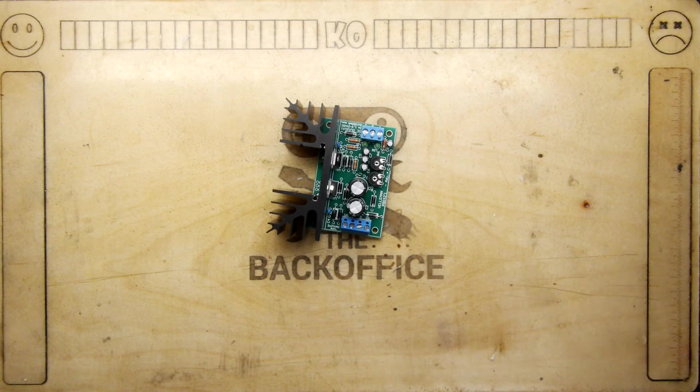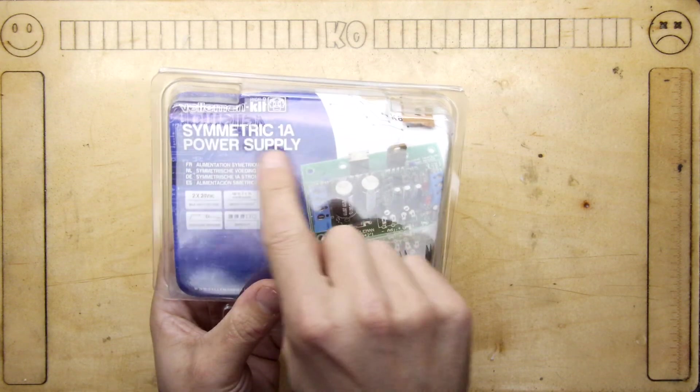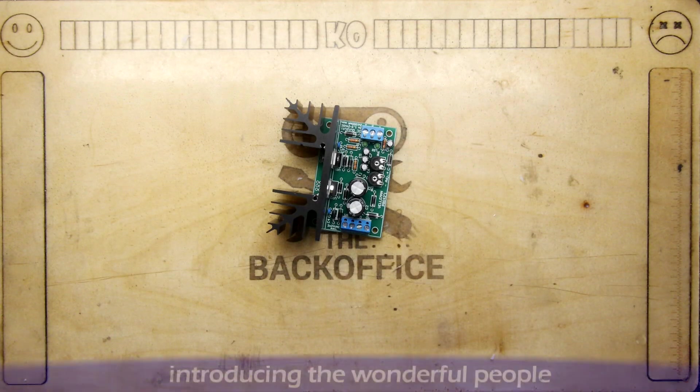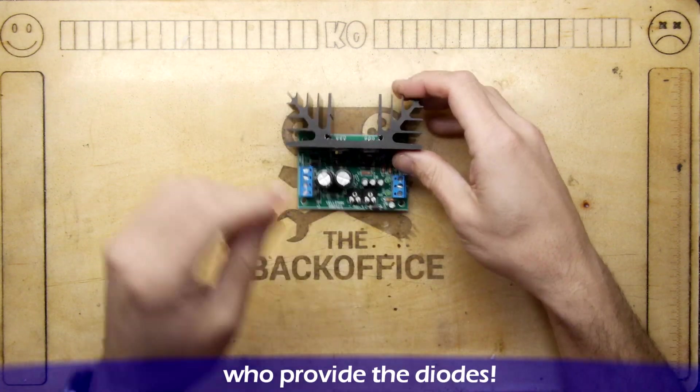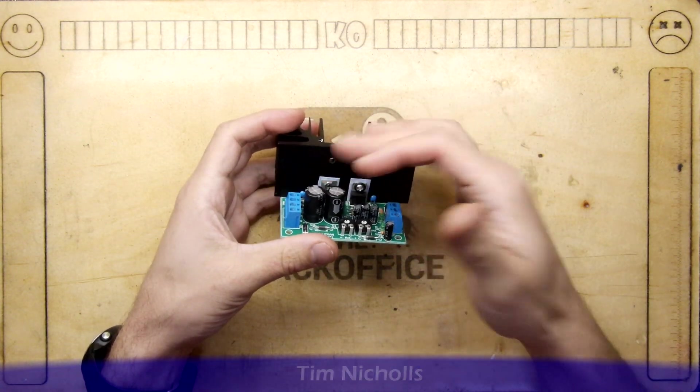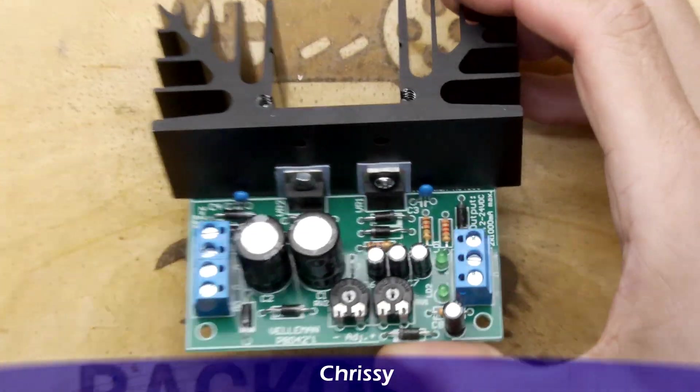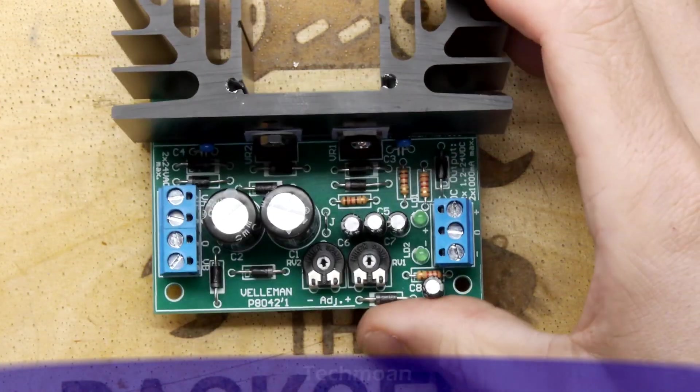If you recall, it's a power supply—a symmetric one amp power supply. The idea behind it is it has a positive voltage regulator and a negative voltage regulator. They are both adjustable; you can see the adjustment pots here.